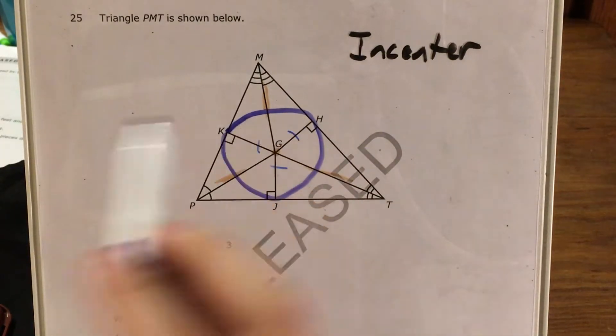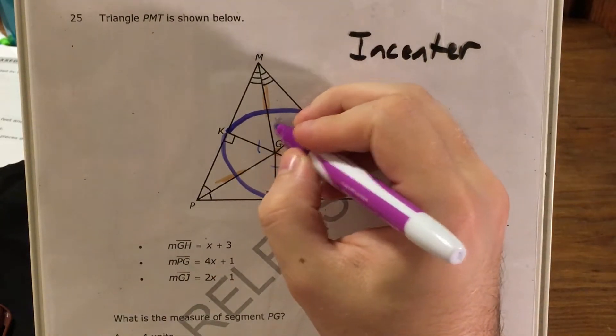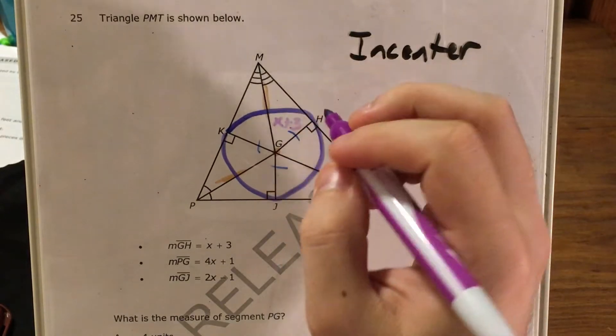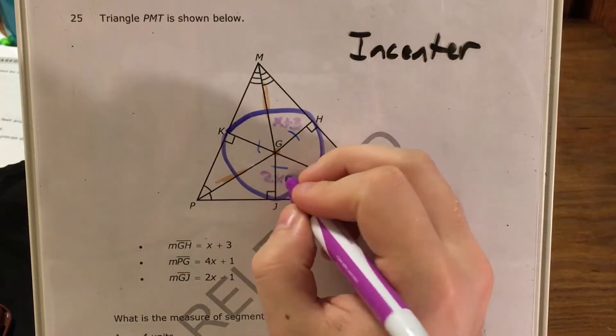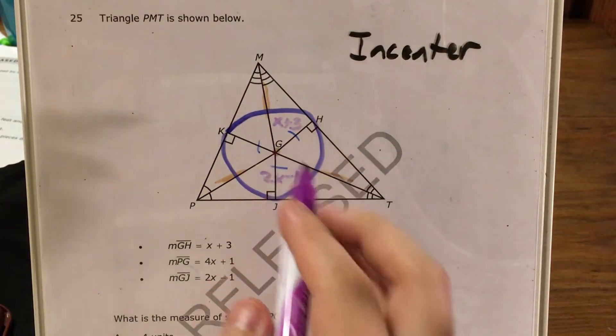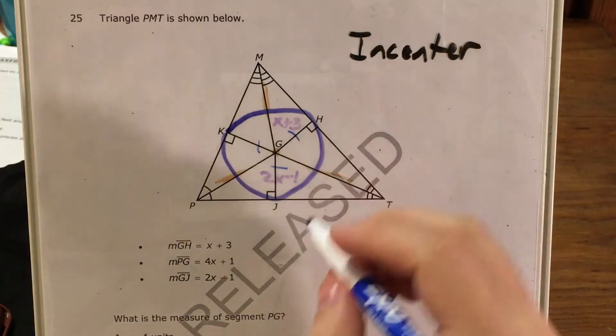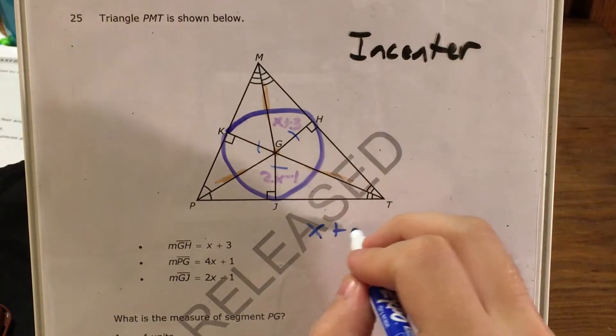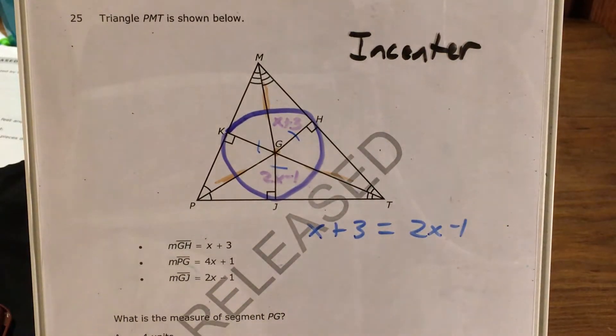So now this is the most important piece of information here, because this is how I can get that if GH is x plus 3 and GJ is 2x minus 1, this is how I can know that I need to set these up as an equation, where since these are congruent, I can say that their expressions are equal. So x plus 3 equals 2x minus 1.